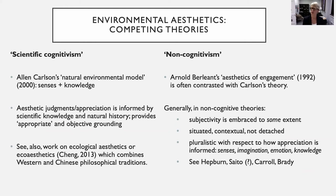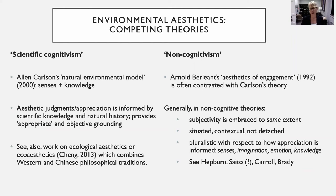Carlson argues that aesthetic judgments and appreciation are informed by scientific knowledge and natural history, and this provides a kind of appropriate objective grounding. In the absence of artistic conventions and artistic knowledge, we have natural history and scientific knowledge, because in his view these are the most appropriate forms and frames of knowledge to bring into our aesthetic appreciation of the environment, since we no longer have those artistic conventions which might guide our judgments. It is also notable that eco-aesthetics has emerged in China, combining both Western and Chinese philosophical traditions.